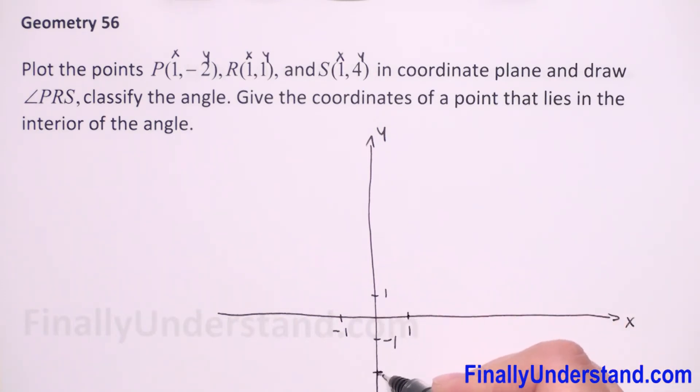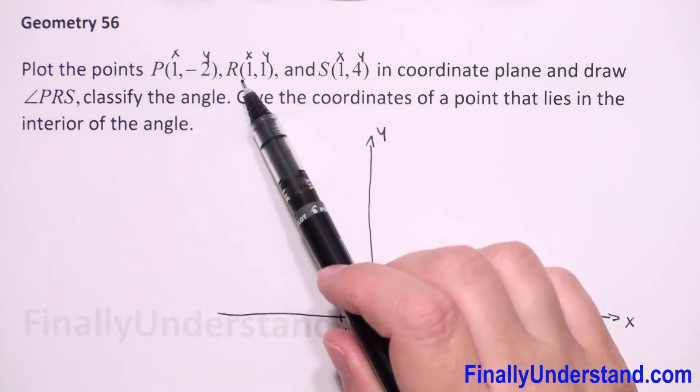Next we have to find point R at (1, 1). So this is our R - x is one, y is one. This is point R.